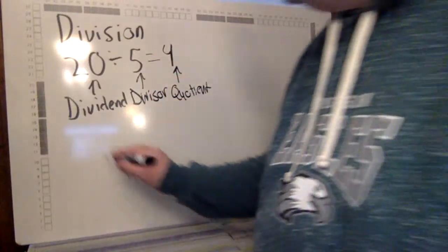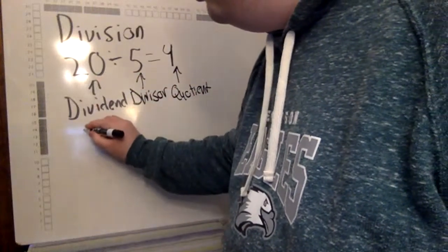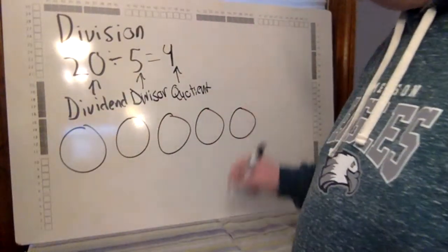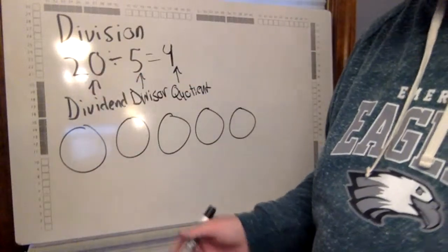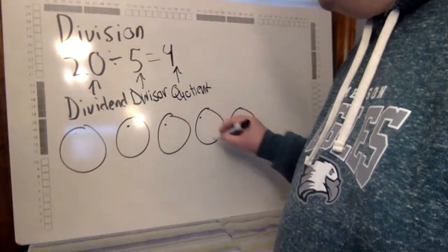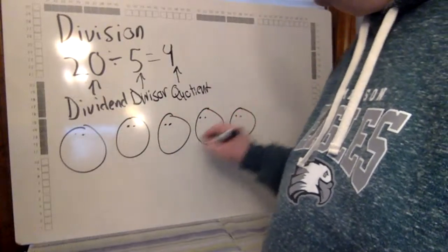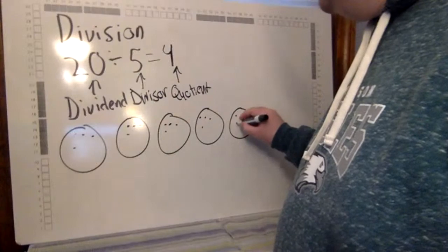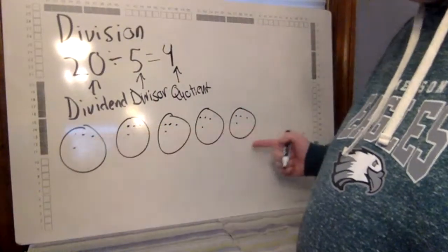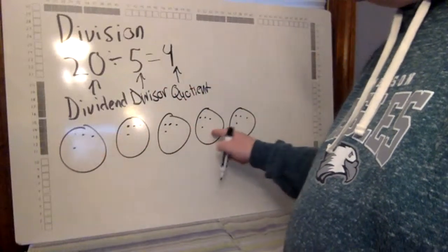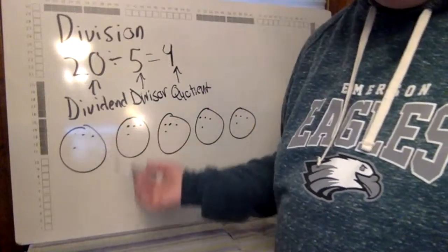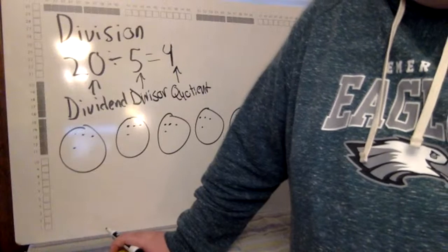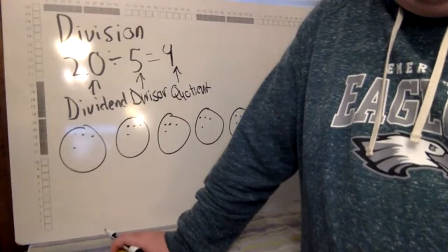Let's do this out as a model. I'm going to break 20 into five equal groups — one, two, three, four, five — and then count until I get to twenty. I put twenty total items into five equal groups and each group has four items in it.